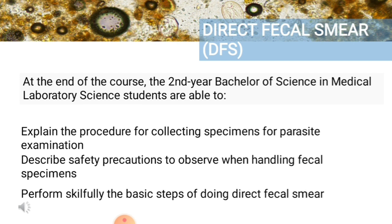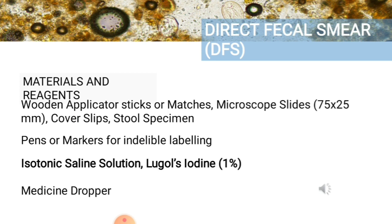The objectives of this section: students should be able to explain the procedure for collecting specimens for parasite examination, describe safety precautions when handling fecal specimens, and perform skillfully the basic steps of direct fecal smear. Materials needed include: wooden applicator sticks or matches, microscope slides (75 x 25 mm), coverslips, stool specimen, pens or markers for indelible labeling, isotonic saline solution, Lugol's iodine 1%, and a medicine dropper.